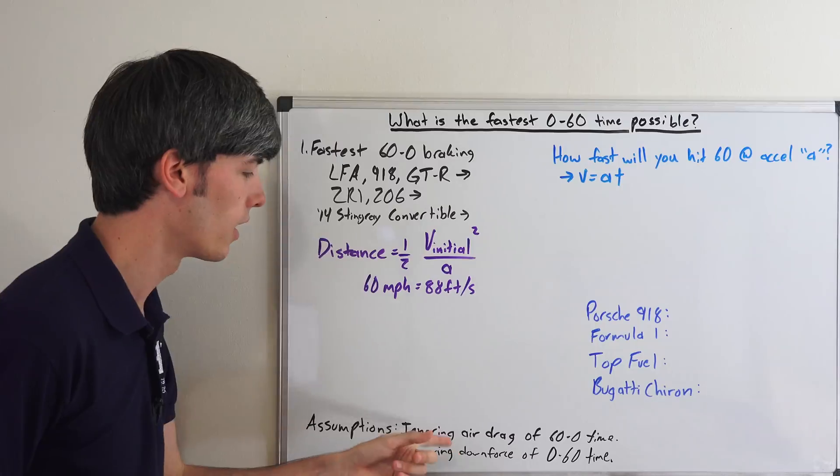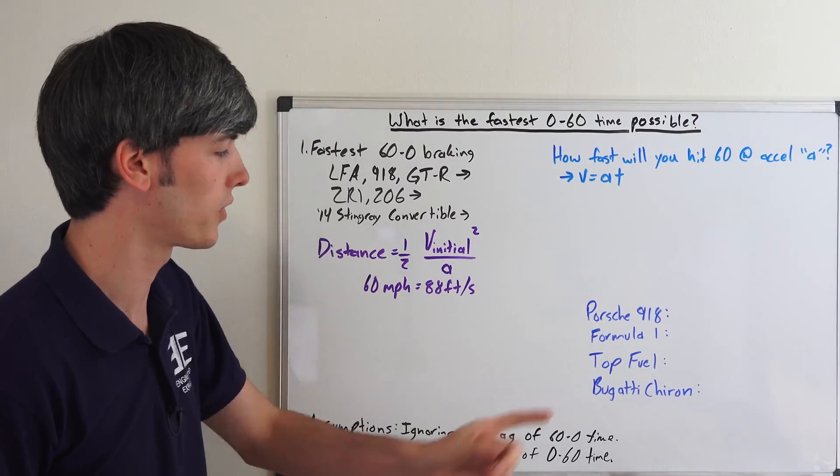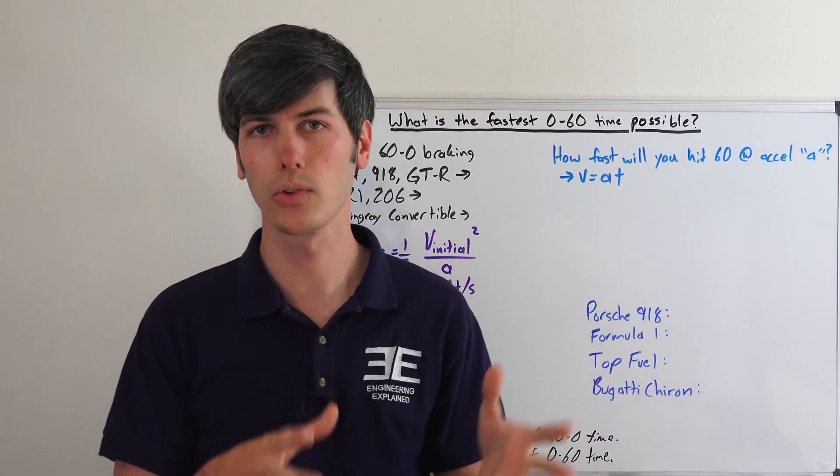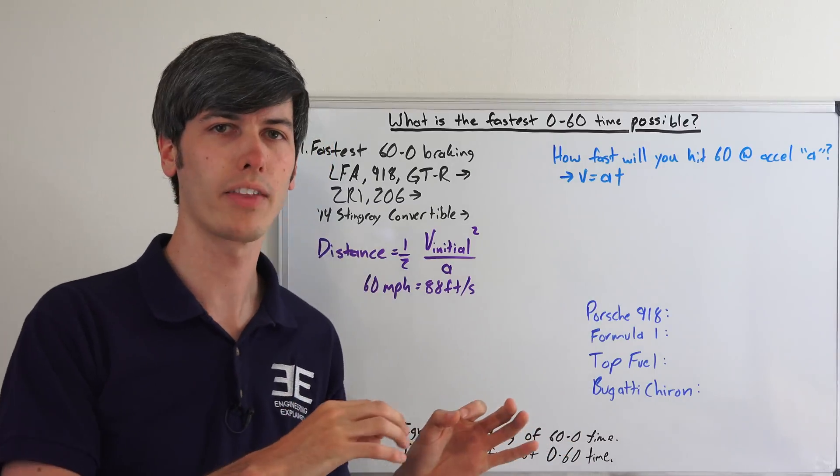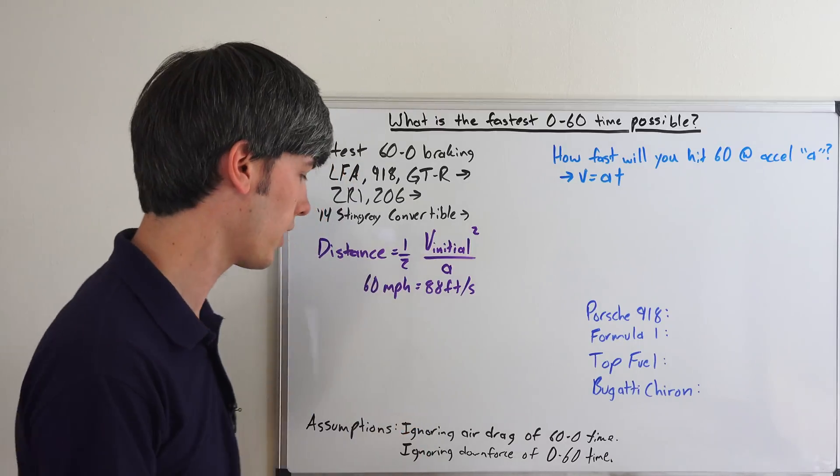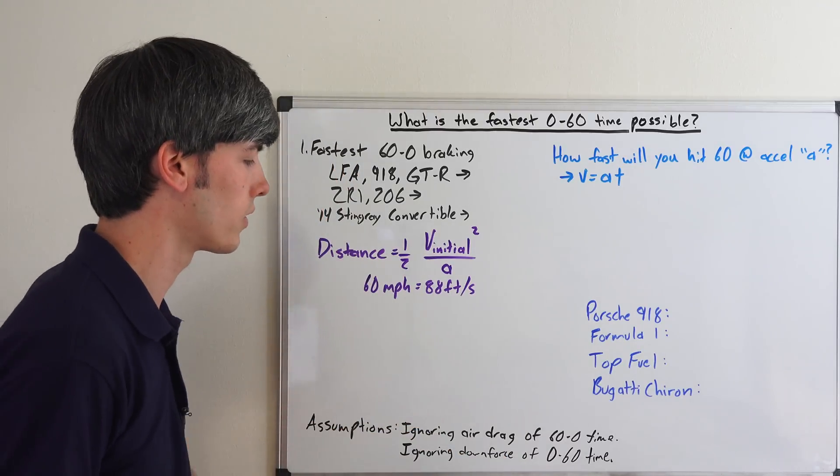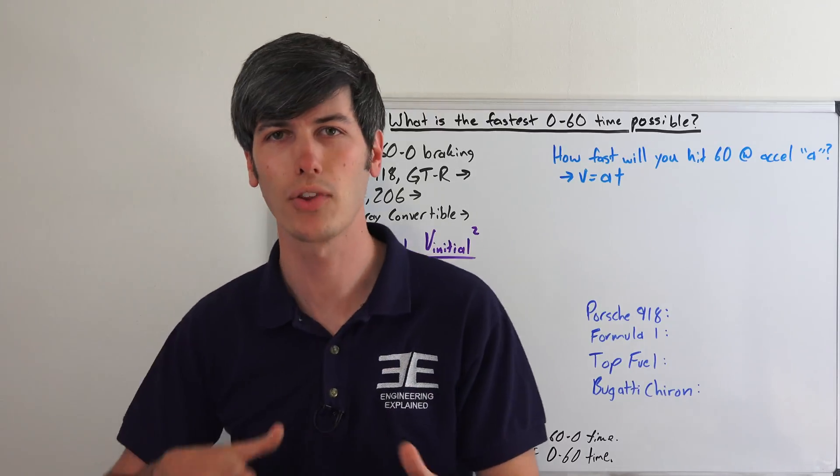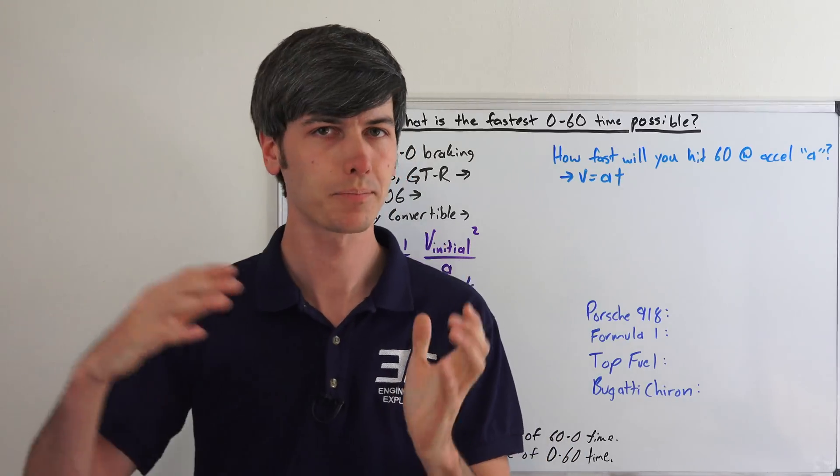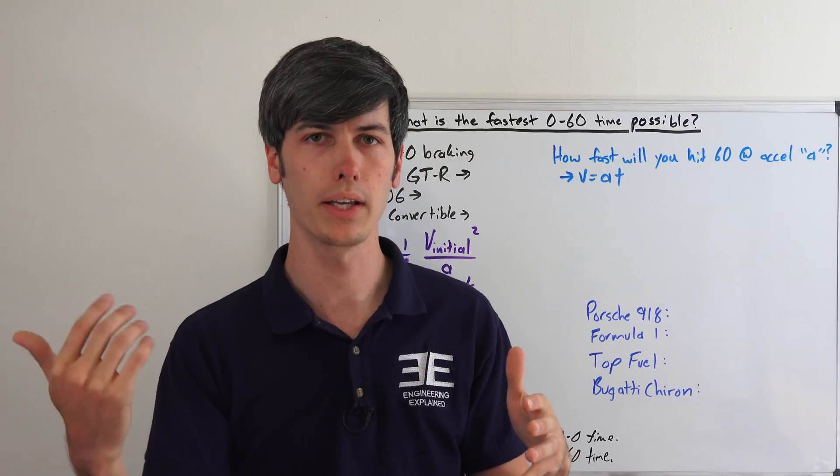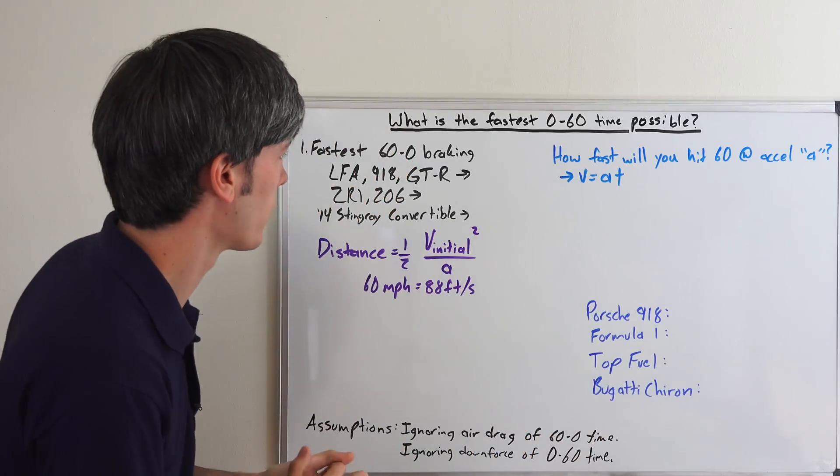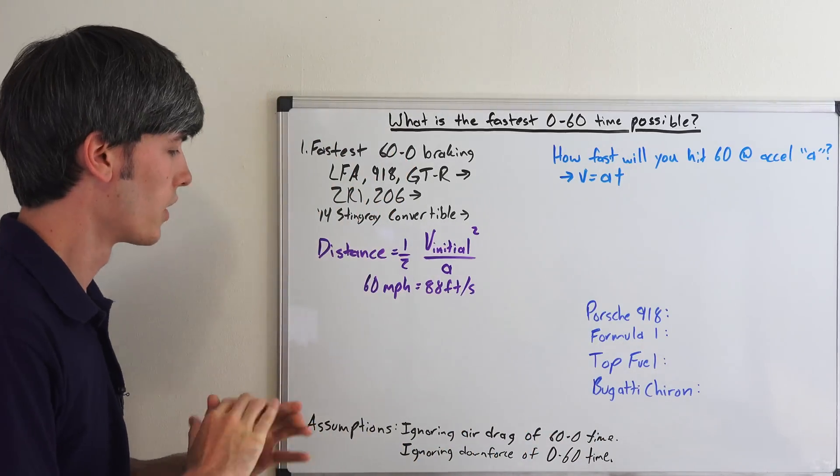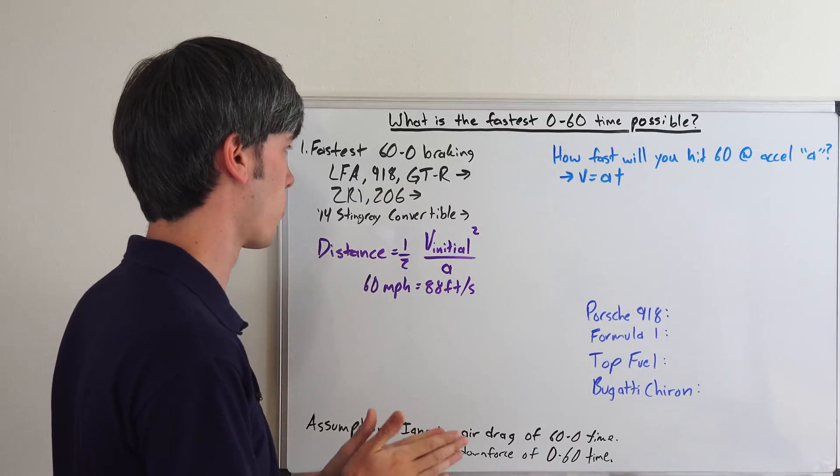Now, there are going to be some assumptions there. We're going to ignore air drag from 60 to 0. Air is going to help slow a vehicle down from 60 to 0, so the acceleration number that I get out of that is going to be slightly higher than realistic. But we're also going to ignore downforce for the 0 to 60 times, so that can kind of counter it a little bit, because once you get up to 40, 50 miles an hour, that downforce can help you accelerate faster. And so, if you have the power, of course, let's get into the math for this.